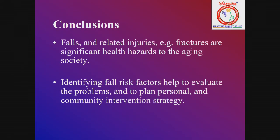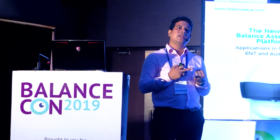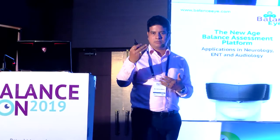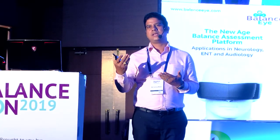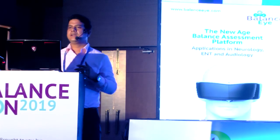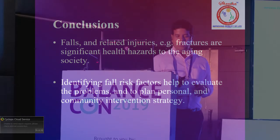In conclusion, falls and related injuries such as fractures are significant health hazards to the aging society. Identifying the 10 to 11 fall risk factors is very important to evaluate problems and plan personal and community intervention strategies. Systematic musculoskeletal, neuromuscular, and neurological analysis using available instrumental formats — like the Berg Balance Test and the Timed Up and Go test — can be used. Take printouts from the internet, evaluate balance at different levels, and apply these prevention and intervention strategies for fall prevention in elderly populations.